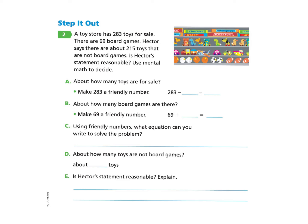Let's look at the next page, page 255, under Step It Out Part 2. A toy store has 283 toys for sale. There are 69 board games. Hector says that there are about 215 toys that are not board games. Is Hector's statement reasonable? Use mental math to decide.